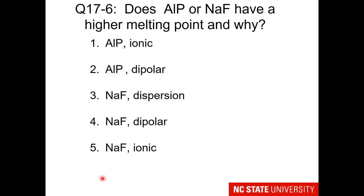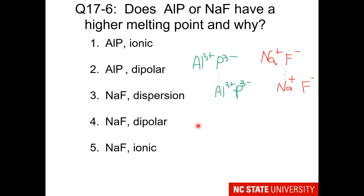Here is a question that has nothing to do with molecules. Aluminium is a metal, and sodium is a metal, so we are dealing with the other major class of materials known as ionic compounds. I'd like to know which of these materials has the higher melting point and why. This question is to remind students to think about charge interactions — specifically evaluating the interaction between a minus three and a plus three, or a minus one and a plus one, to make this decision.